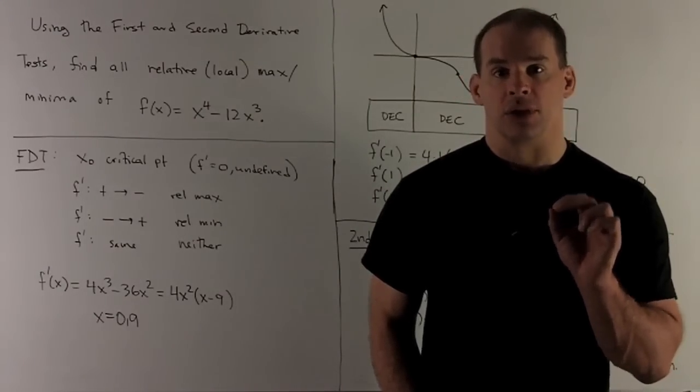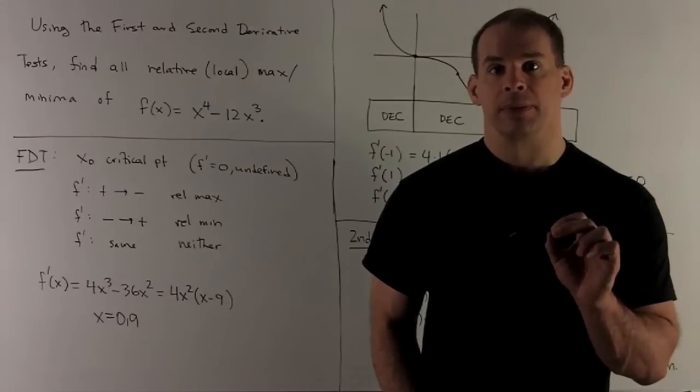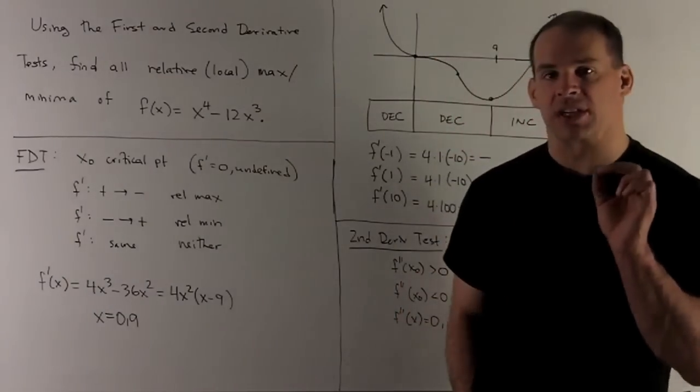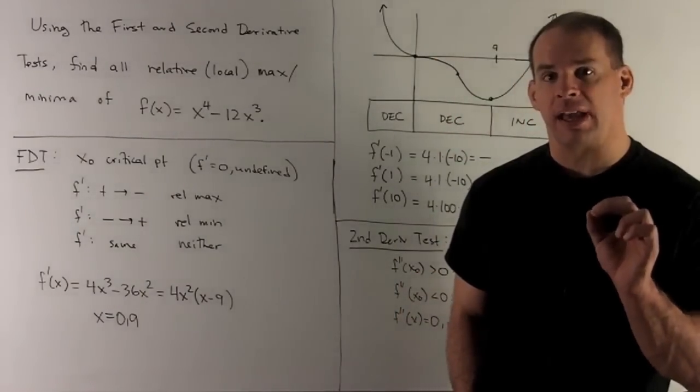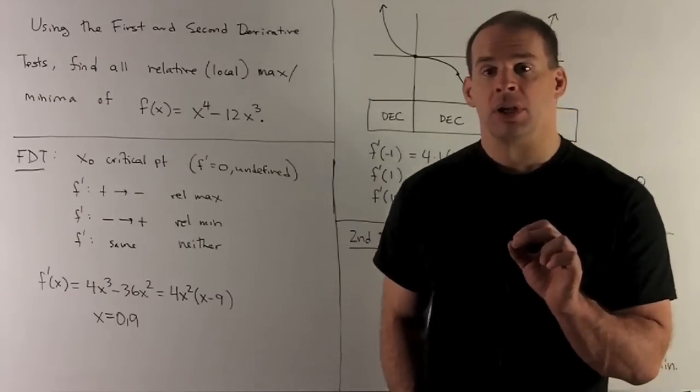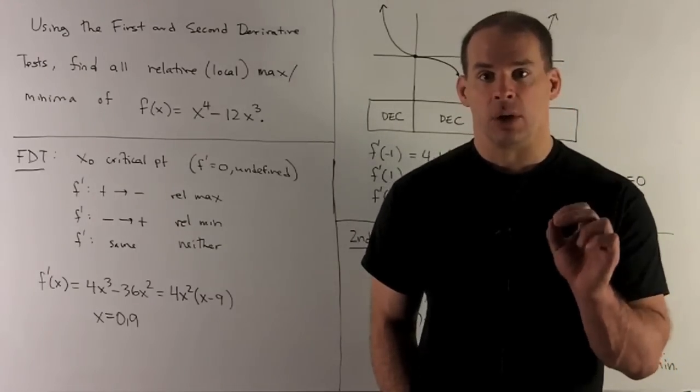So let's check our function. Take our first derivative, we're going to get 4x^3 - 36x^2. I can factor that into 4x^2 times (x - 9). So I have critical points at 0 and 9.